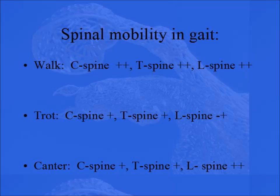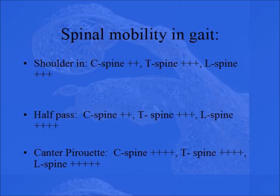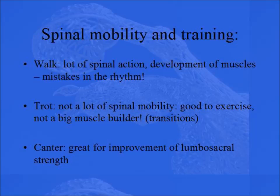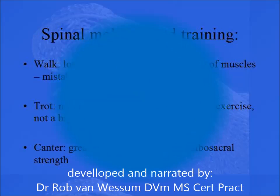When you look at this, you can see that the walk is nearly the most mobile gait in terms of mobility. Looking at some specific exercises: the shoulder-in shows much more mobility than in the normal gait. In the half pass, even more. And in a canter pirouette you can see a lot of motion in the C-spine, in the thoracic spine — lateral flexion — and a lot of motion in the lumbar spine going up and down. So, spinal mobility and training: it's good to realize that the walk has a lot of spinal action, which really helps to develop a horse. The trot is a great exercise, but it's not really a muscle builder because the spine is not very active — it's more stabilized. In the canter you get a lot of stimulation of the lumbosacral region.